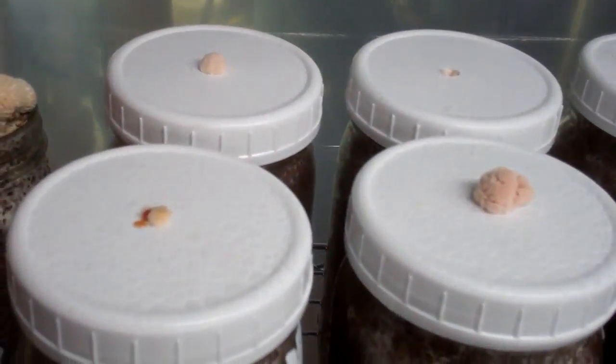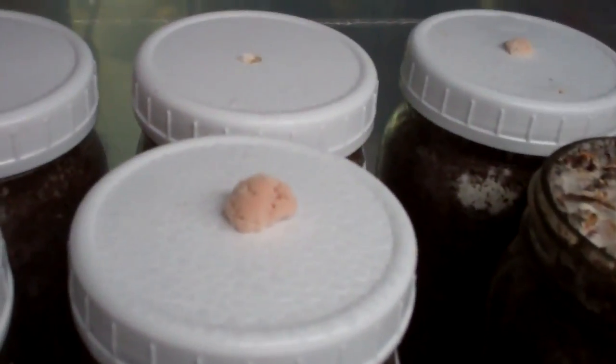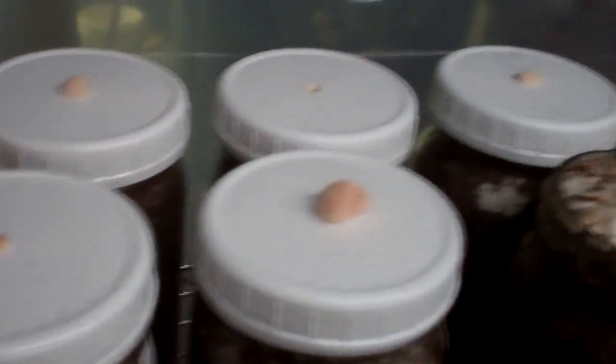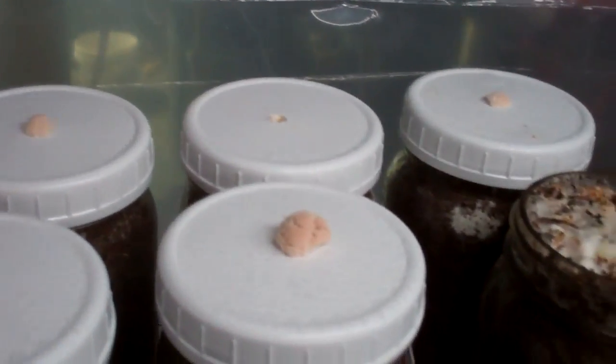They all have the same culture in them. They all have the same substrate in them, and they all just have that single hole that's the same size. So then I'll have a single fruit on top of each jar that I can just come and twist off and pick and pluck.